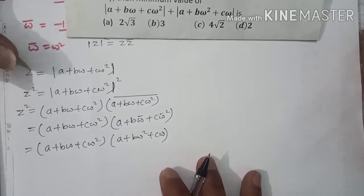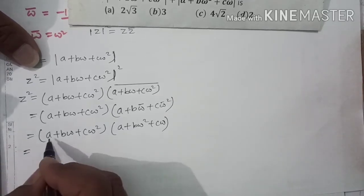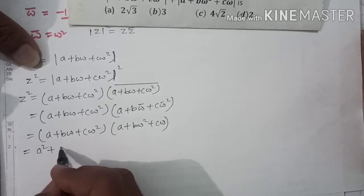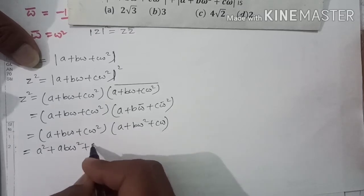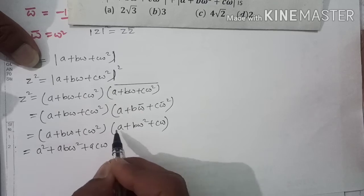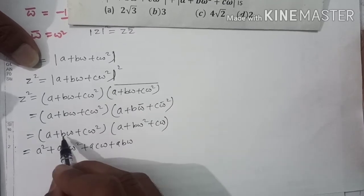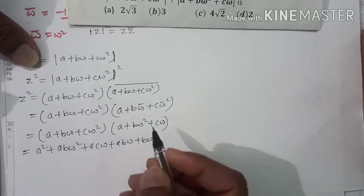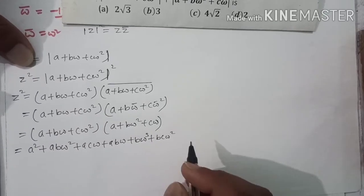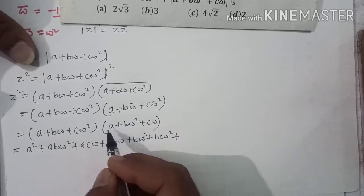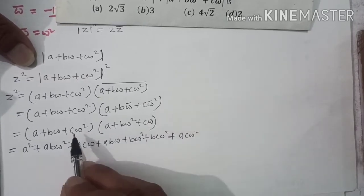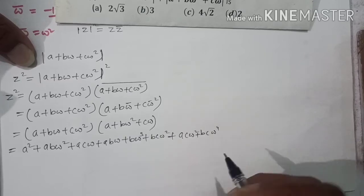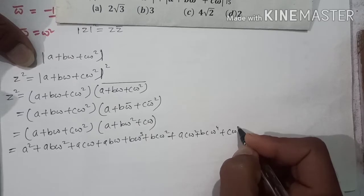اب ان دونوں کو multiply کرتے ہیں: a·a = a²، a·bω² = abω²، a·cω = acω، bω·a = abω، bω·bω² = b²ω³، bω·cω = bcω²، cω²·a = acω²، cω²·bω² = bcω⁴، cω²·cω = c²ω³۔